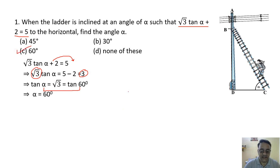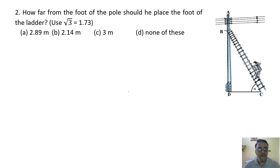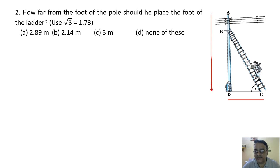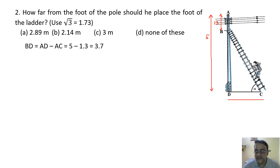The correct option is C. Now moving to question number two: how far from the foot of the pole should he place the foot of the ladder — we have to find DC. The total height is 5 meter and 1.3 is given, so BD = 5 − 1.3 = 3.7 meter.